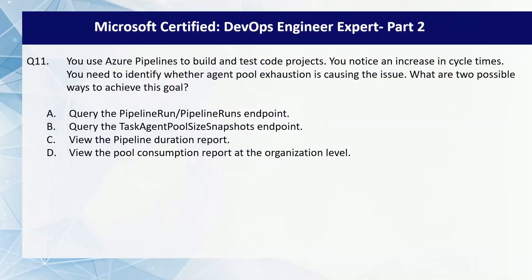Hello and welcome to the second part of our Microsoft Certified DevOps Engineer Expert Ultimate Course. We are starting with question number 11. You use Azure Pipelines to build and test code projects. You notice an increase in cycle times. You need to identify whether agent pool exhaustion is causing the issue. What are two possible ways to achieve this goal? Your options are: query the pipeline run or pipeline runs endpoint; query the task agent pool size snapshots endpoint; view the pipeline duration report; view the pool consumption report at the organization level.